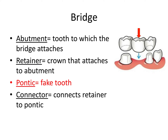We've already talked about the components of a bridge. Just to review: the abutment is the tooth to which the bridge attaches. These two abutment teeth have been properly prepped to receive the crowns of a bridge. The retainer refers to the crown that actually attaches to the abutment, so these two would be considered retainers. The pontic is the fake tooth between abutments, and the connector connects the retainer to the pontic.